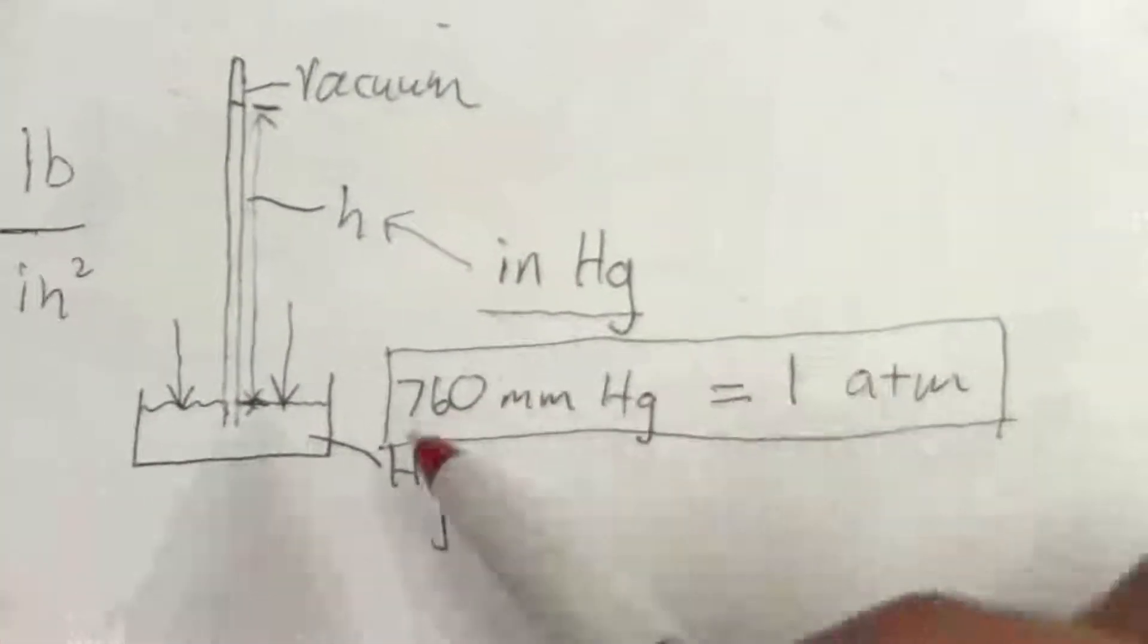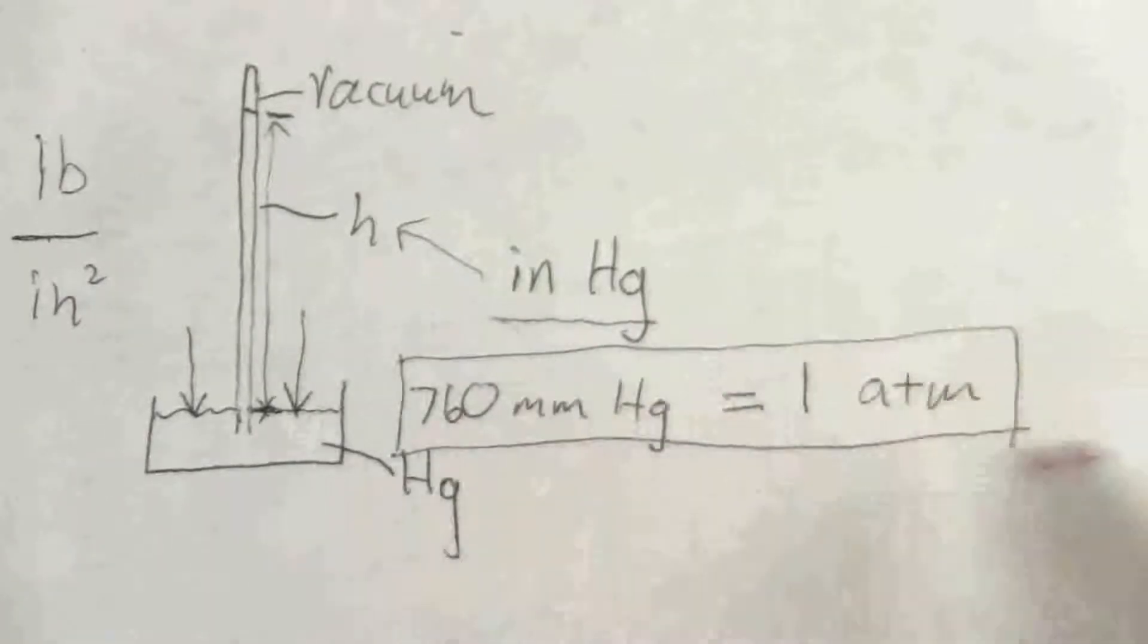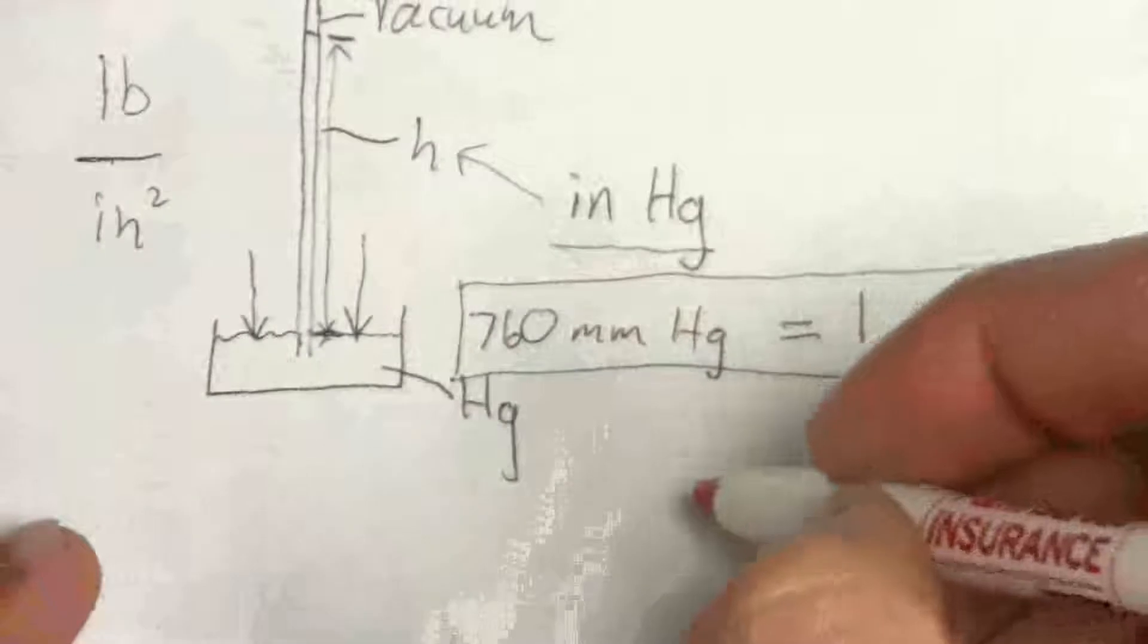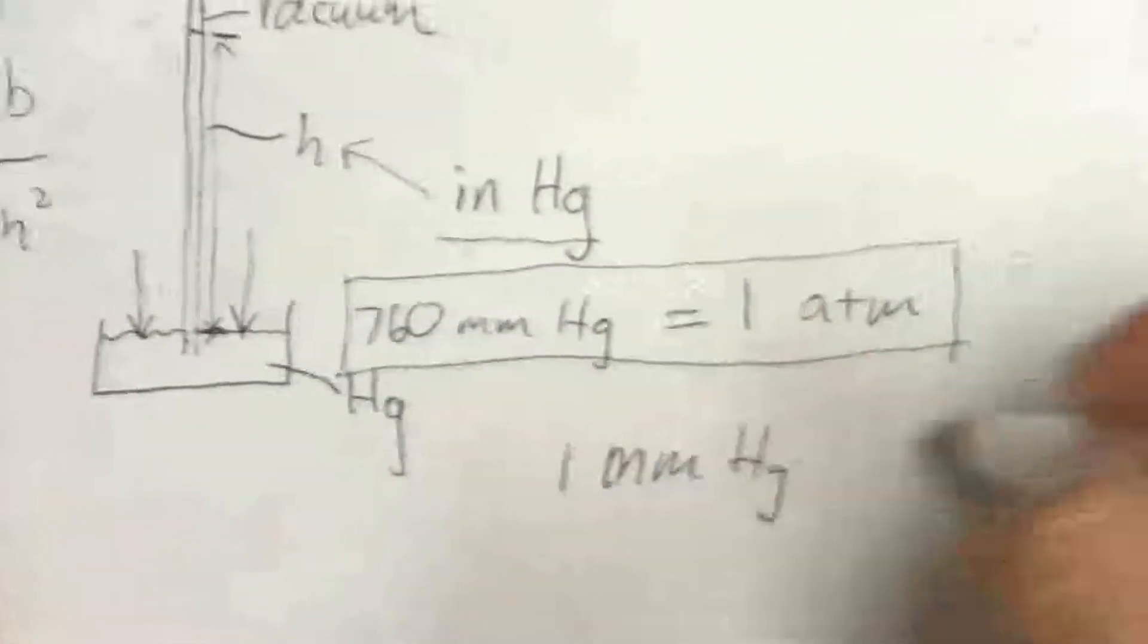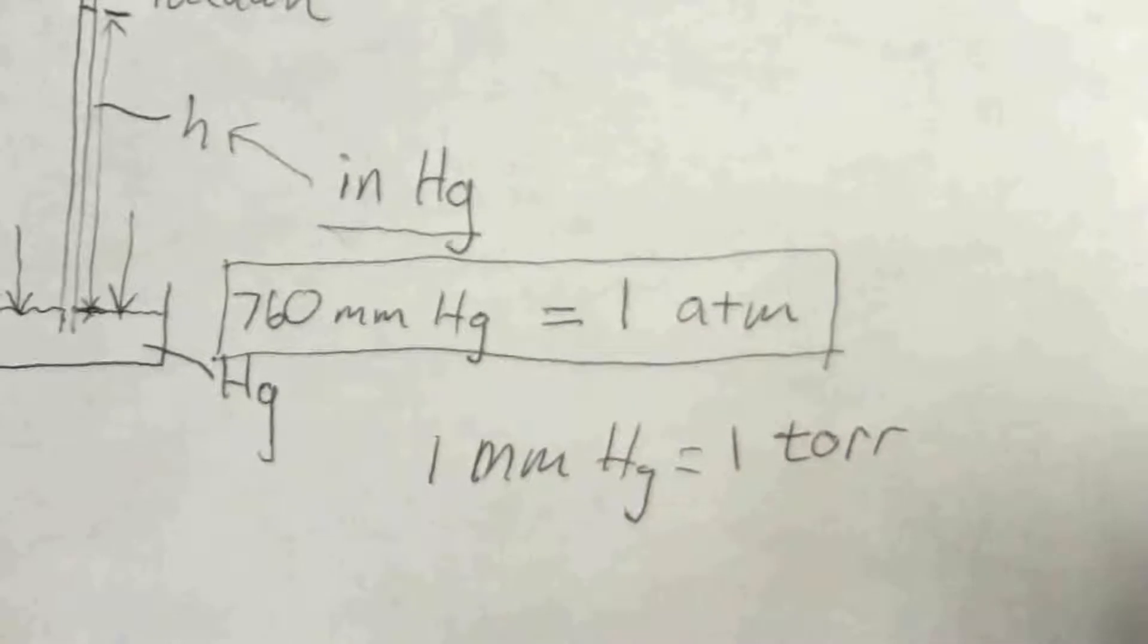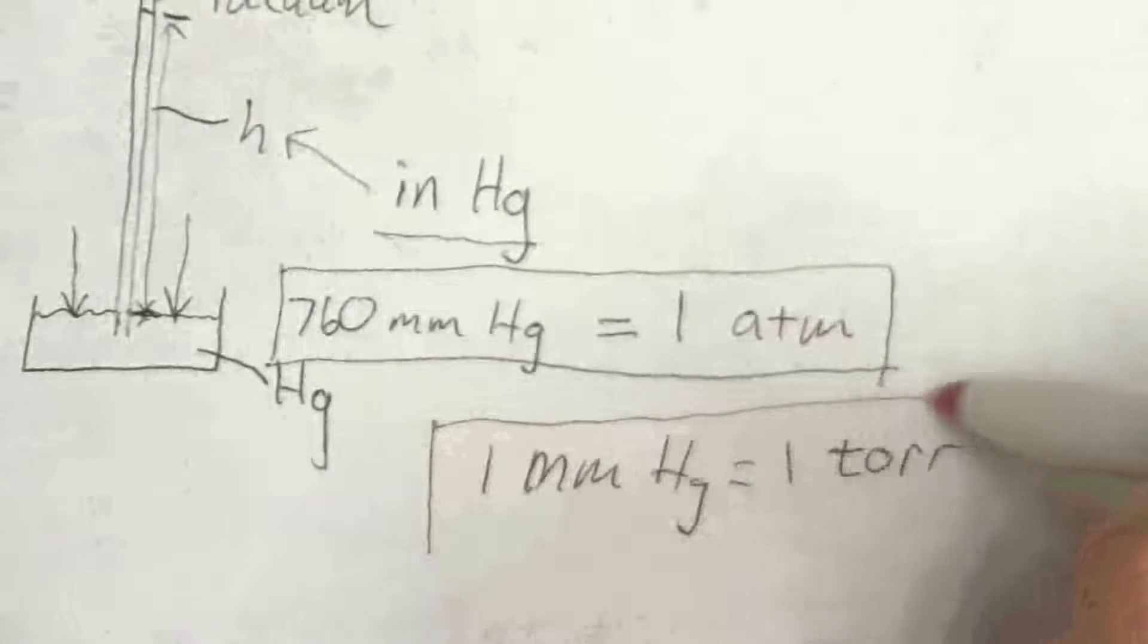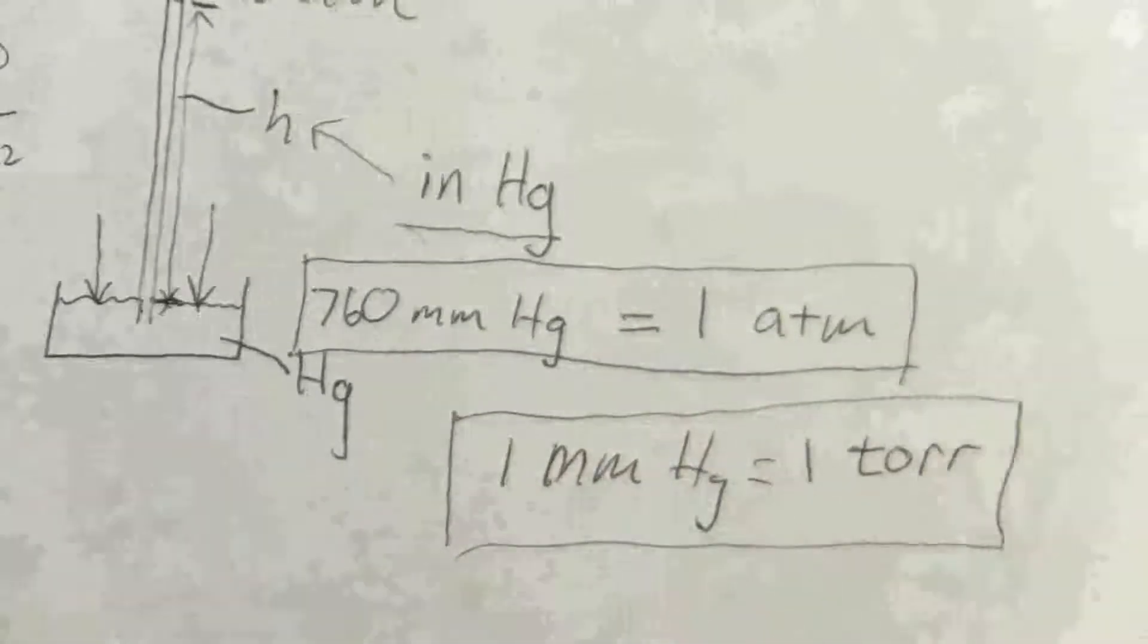the ones we use the most in this class, 760 millimeters of mercury is equal to one atmosphere. That will let you do those conversions. Another one that we use commonly is really the same as millimeters of mercury. One millimeter of mercury is equal to one torr. And so both of these really are good conversion factors to remember, and we will be using those often in this class.